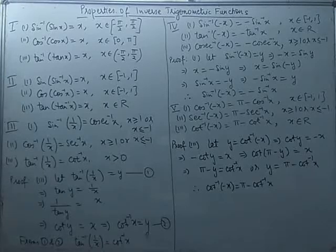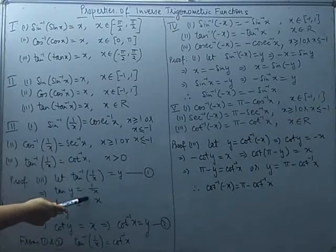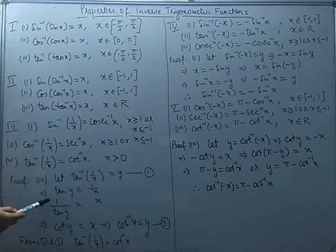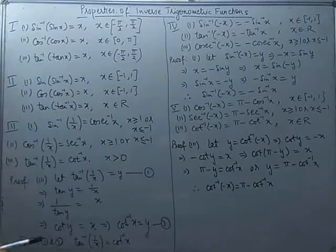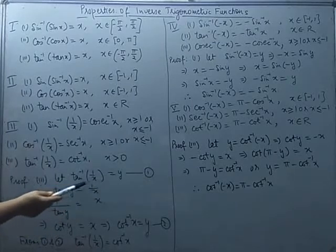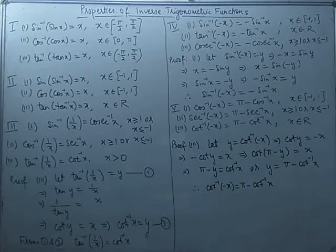Proving the third one: we need to show tan⁻¹(1/x) = cot⁻¹x. Let y = tan⁻¹(1/x), which means tan y = 1/x. Taking the reciprocal of both sides, 1/tan y = x, and since 1/tan y = cot y, we get cot y = x. Taking the inverse of the cot function on both sides gives cot⁻¹x = y. Since y was tan⁻¹(1/x), we have shown that tan⁻¹(1/x) = cot⁻¹x.